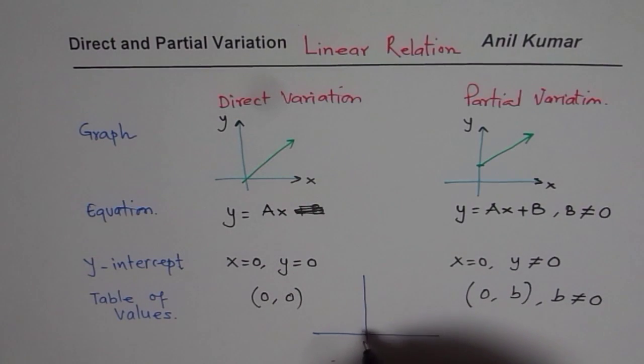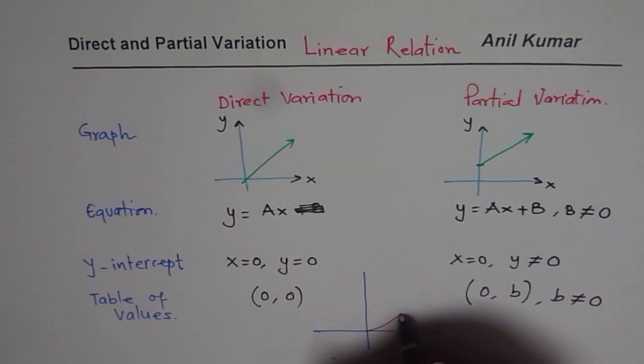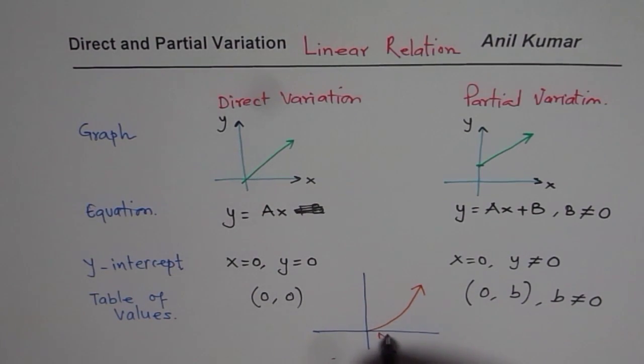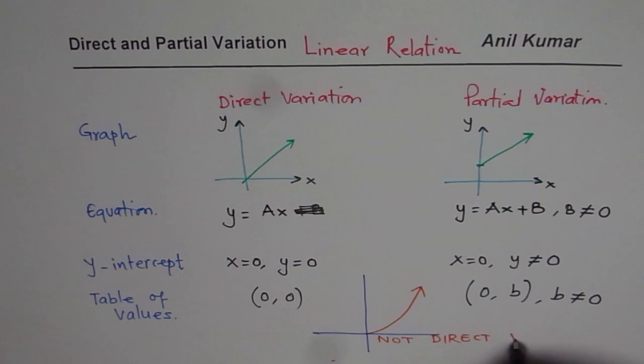If I have a graph which is going through origin, but it is kind of like this. Will that be a direct variation? It goes through origin. Even then, it is not direct variation.